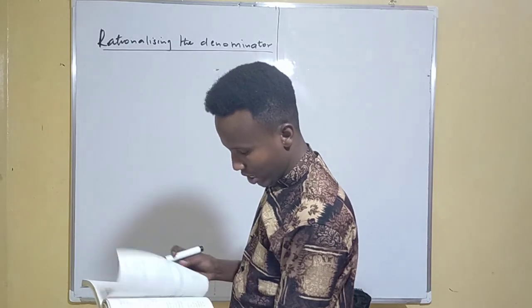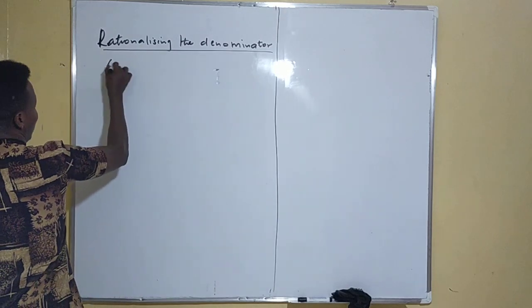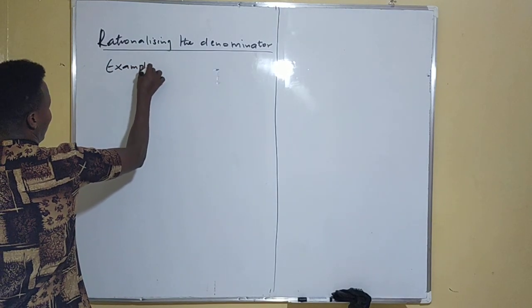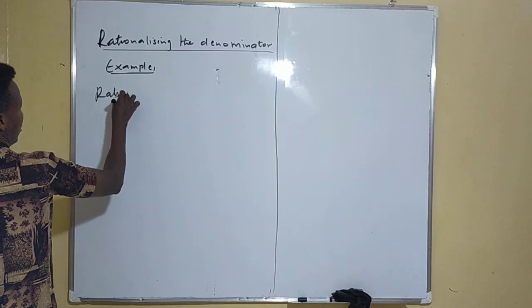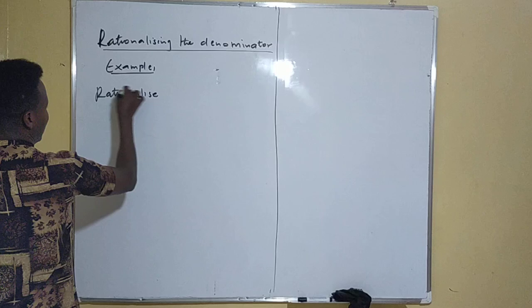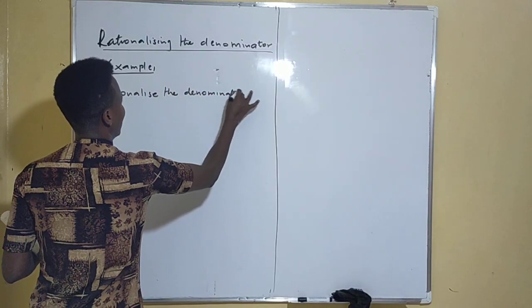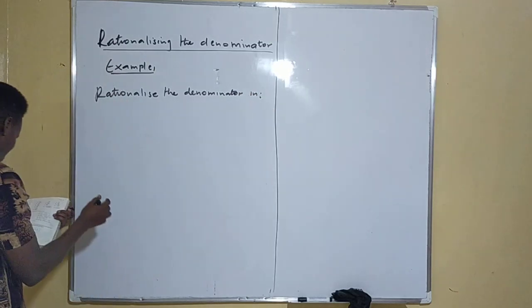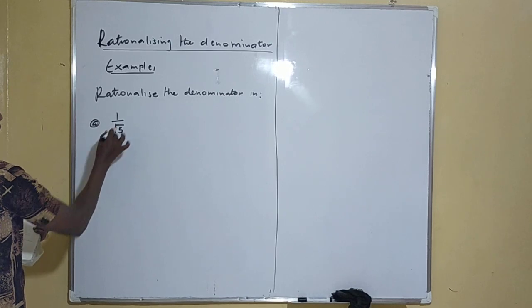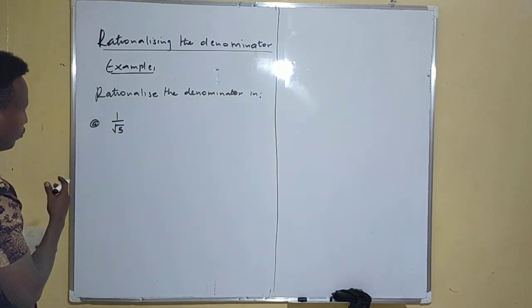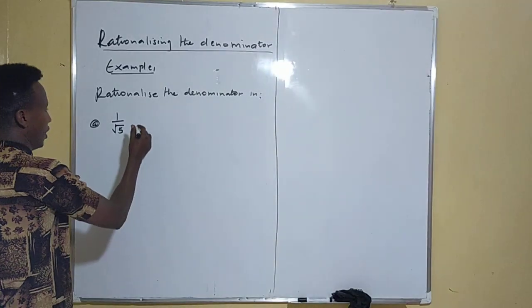Let's see how we rationalize the denominator. We have Example 1. We are told: rationalize the denominator. The first question we have is 1 over root 5. If you want to solve this kind of question, if you want to rationalize it, this is the procedure.